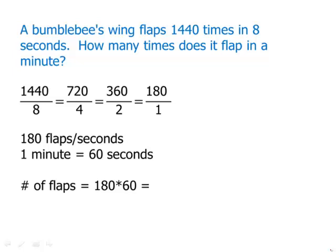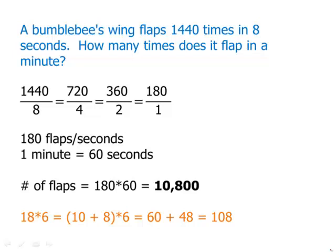Let's drop those zeros and make things a bit simpler. If we're doing 18 times 6, well, one way to think about this, the 18 is 10 plus 8. Well, I can do 6 times 10. That's 60. I can do 6 times 8. That's 48. I can add those two. That's 108. So now we're just going to add the two zeros. And so what we get is a product of 10,800. And that is the number of flaps in a minute.